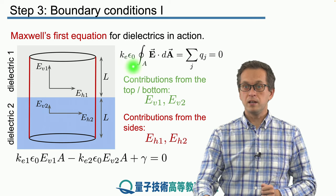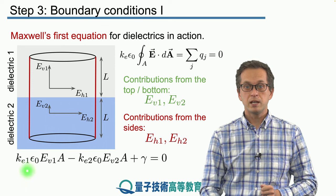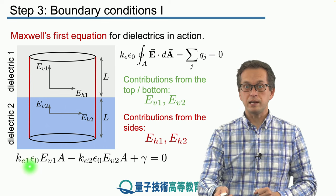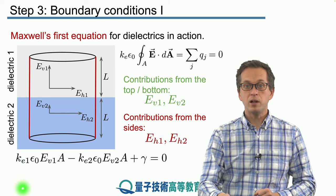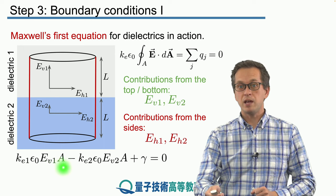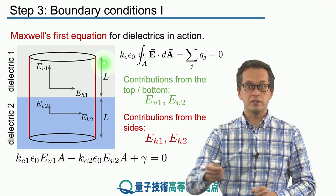Rewriting the left-hand side of Maxwell's first equation we get the following: Ke1 times epsilon naught times eV1 times the area A—that's the flux going through this top flat surface of the cylinder.